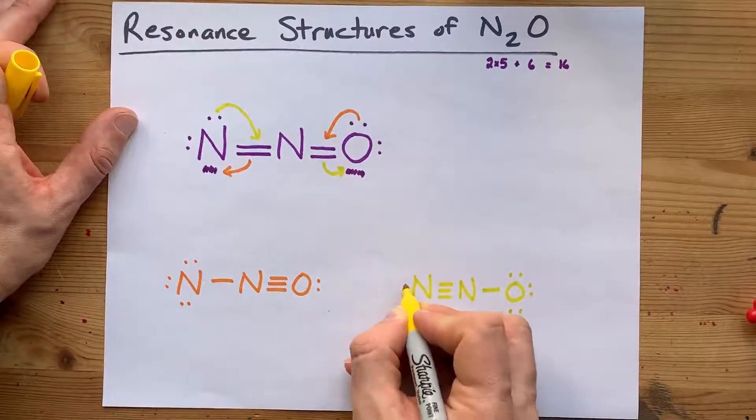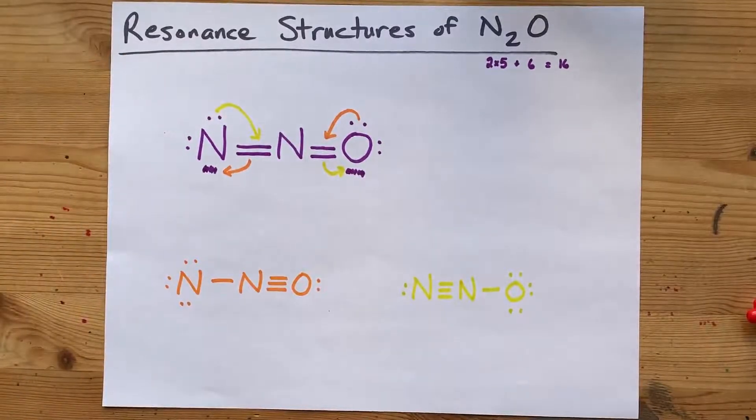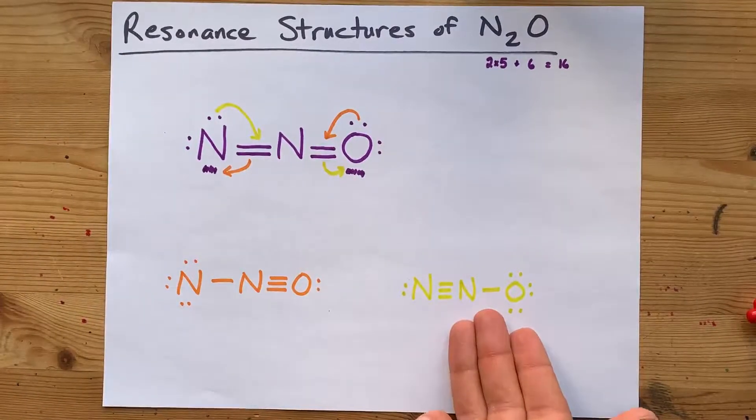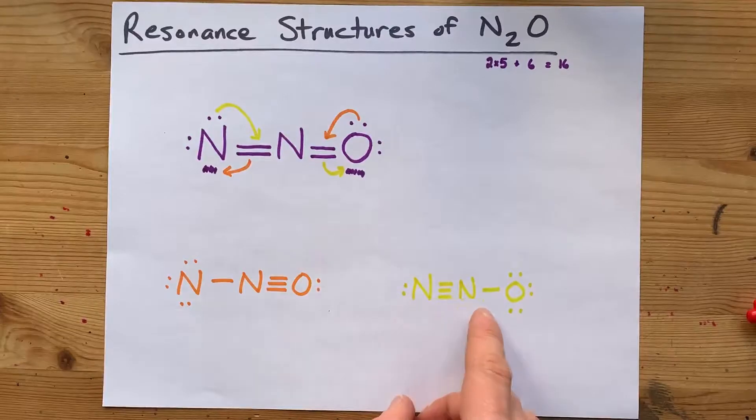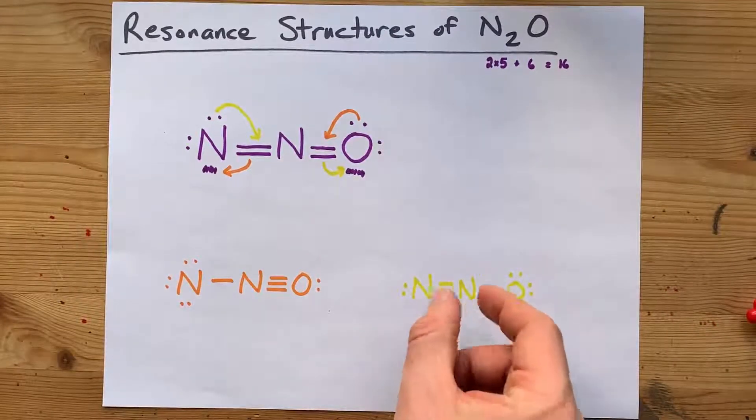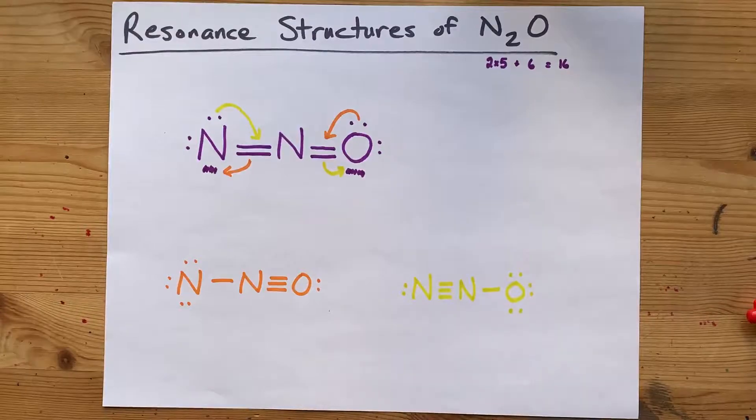There we go. There's the lone pairs. This is also a valid Lewis structure, because all of the atoms have eight electrons in their vicinity, stable octets.